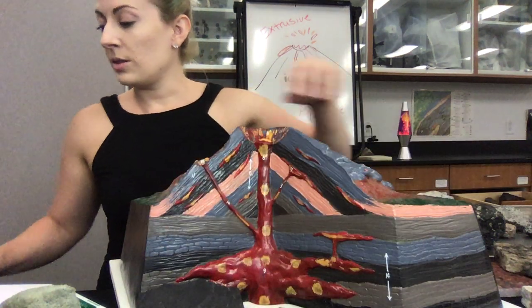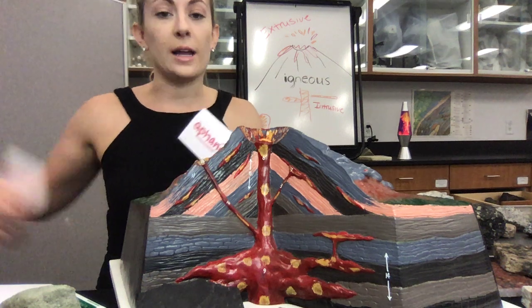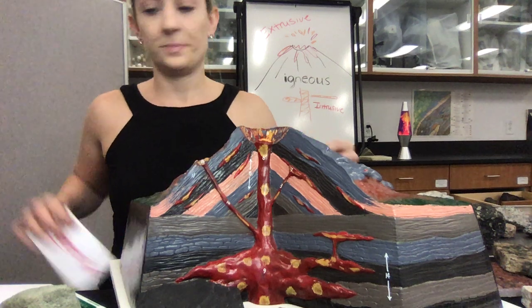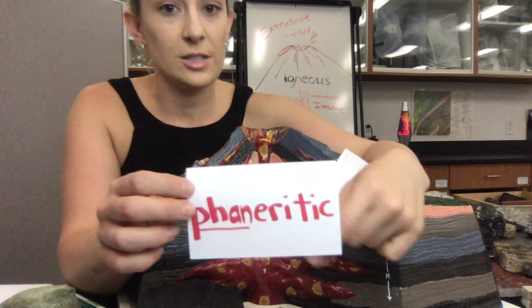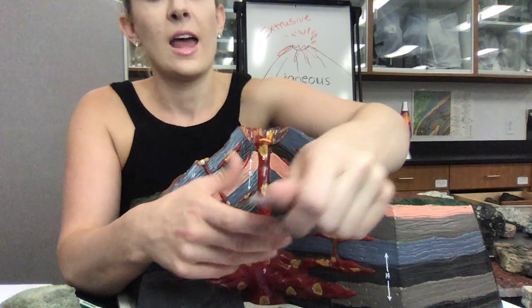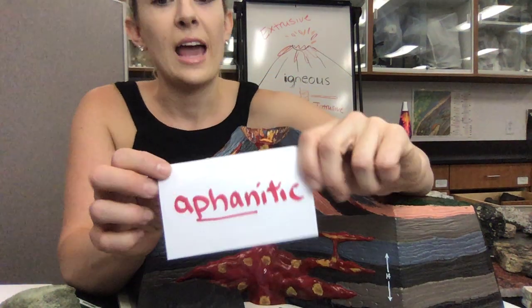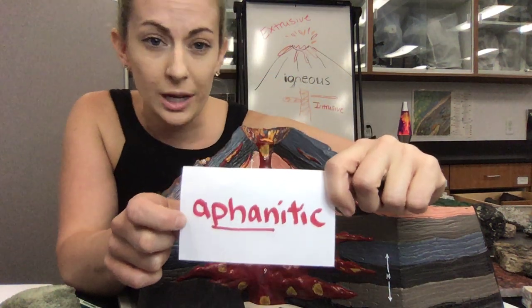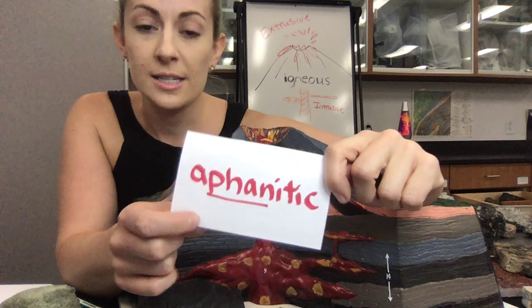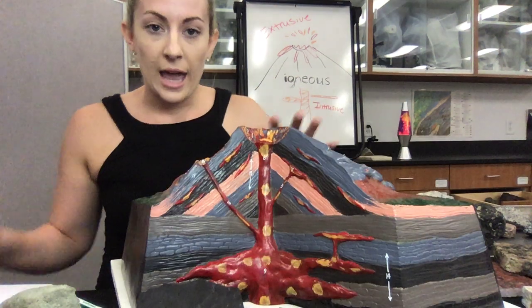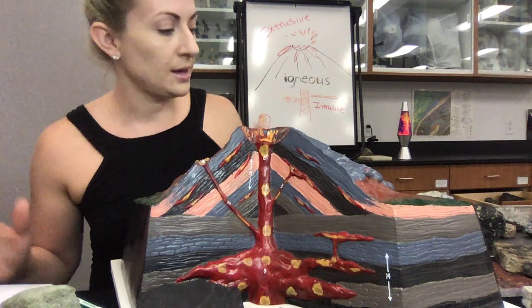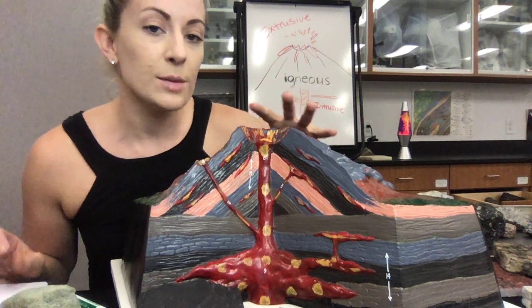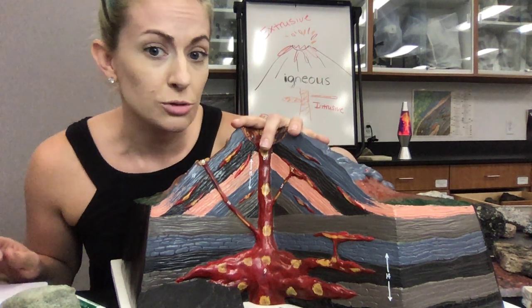The two words that incorporate this root word are 'phaneritic,' meaning something that's super visible, and 'aphanitic,' where the prefix 'a' means without — so something that would be invisible. A phaneritic, or visible, intrusive igneous rock is something that has visible crystals.